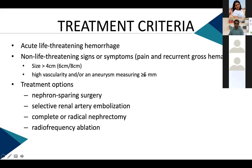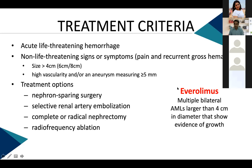Treatment options: nephron-sparing surgery was previously important, but selective renal artery embolization has become the treatment of choice with current hardware. Radical nephrectomy is now limited to the epithelioid variant with higher risk of metastatic component or IVC/renal vein involvement. RFA evidence is growing but still in early stages. For tuberous sclerosis-associated AML, the first-line treatment in asymptomatic patients is now everolimus (mTOR inhibitor) per the TSC consensus group.